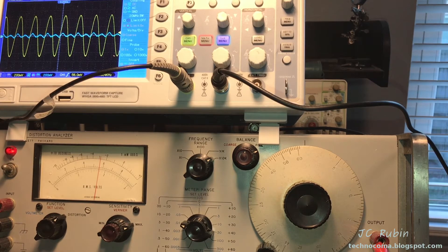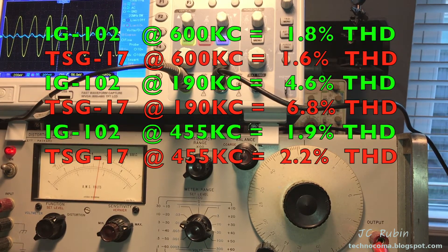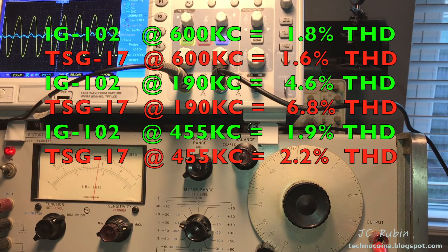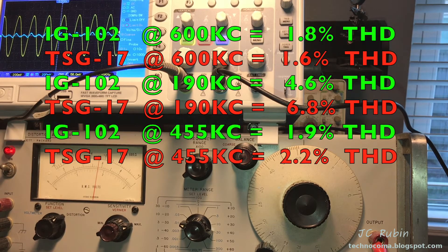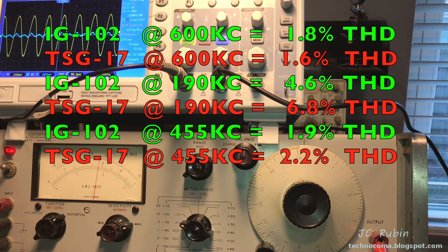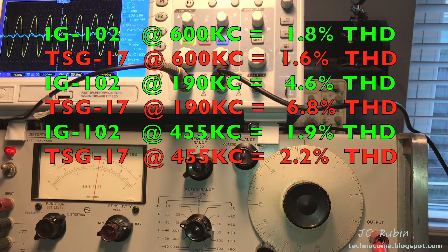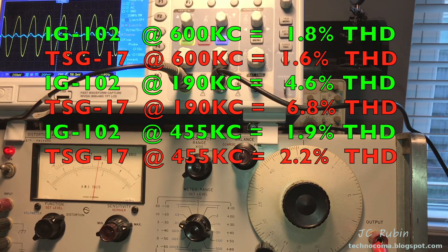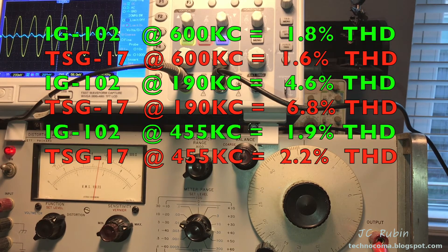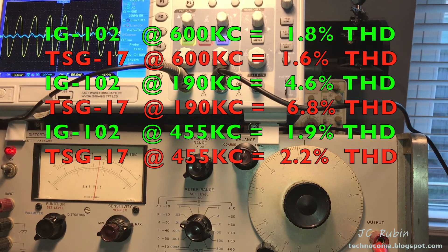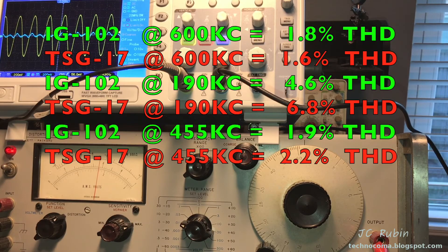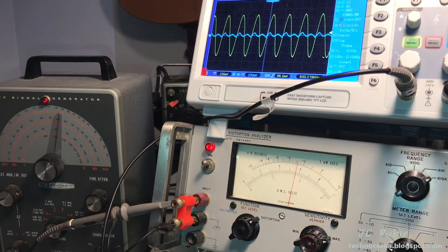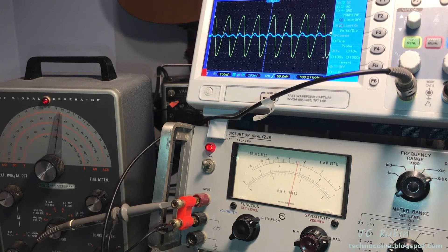Here's a comparison between this Heathkit IG102, which is not a solid state device, versus the TSG17. Within this limited range that I was able to test, we see that both of them had higher harmonic distortion in the lower range and got increasingly better as it approached 455 and then 600. Interesting observation that both were affected in the same manner, albeit the IG102 was lower. So there it is, the harmonic distortion testing of the IG102 as compared to the TSG17. Hope you enjoyed it, thanks for watching.